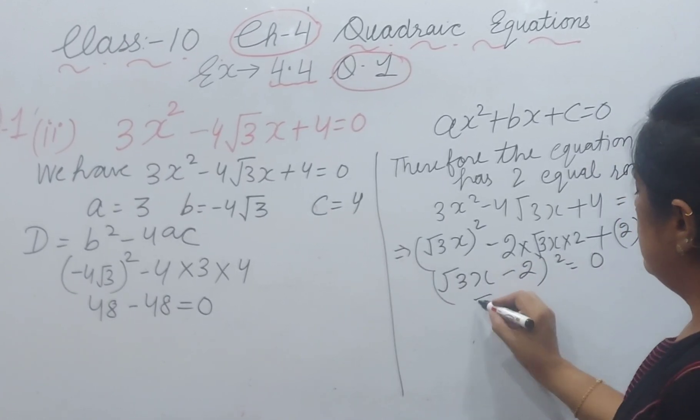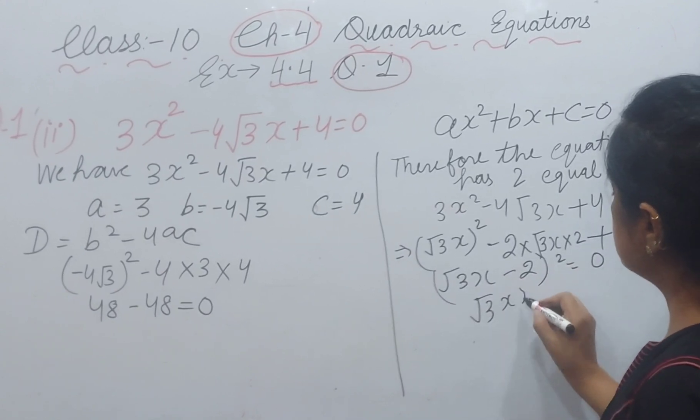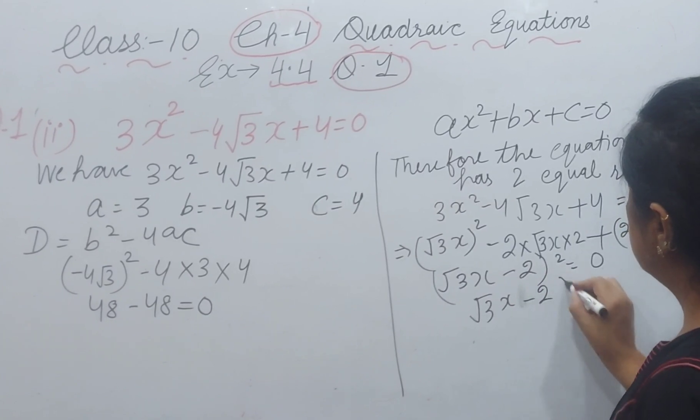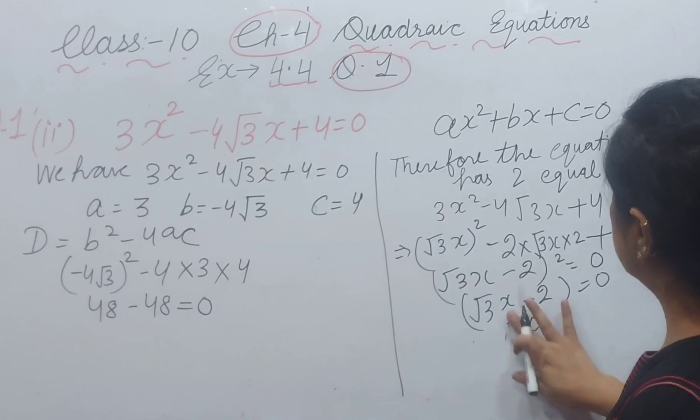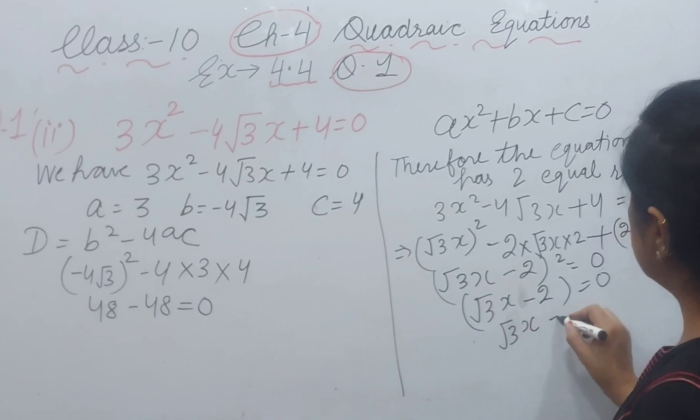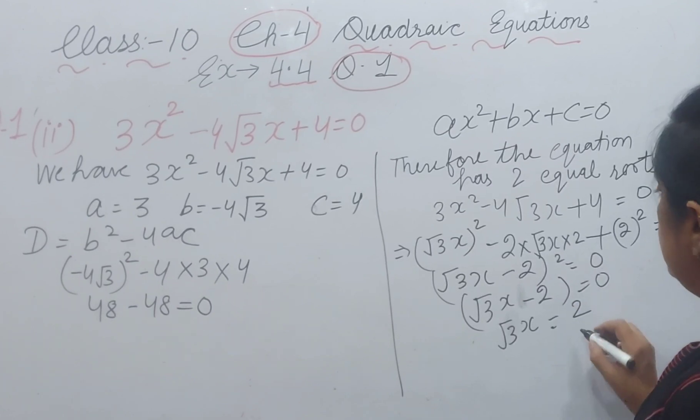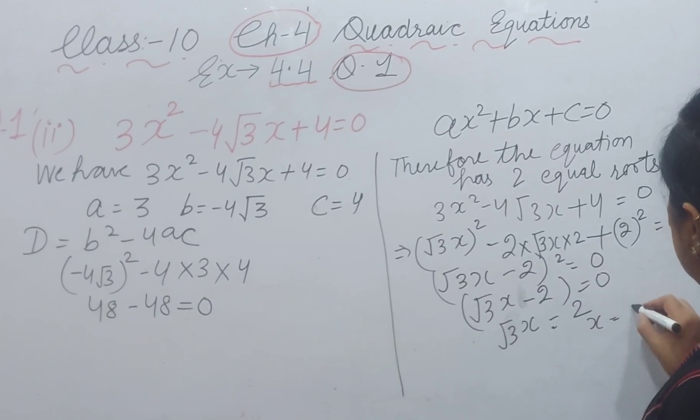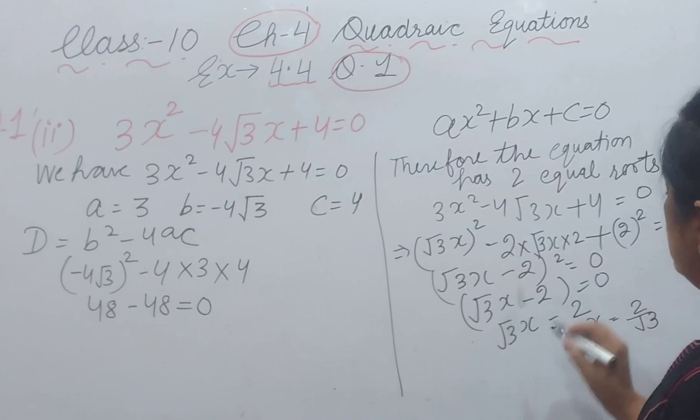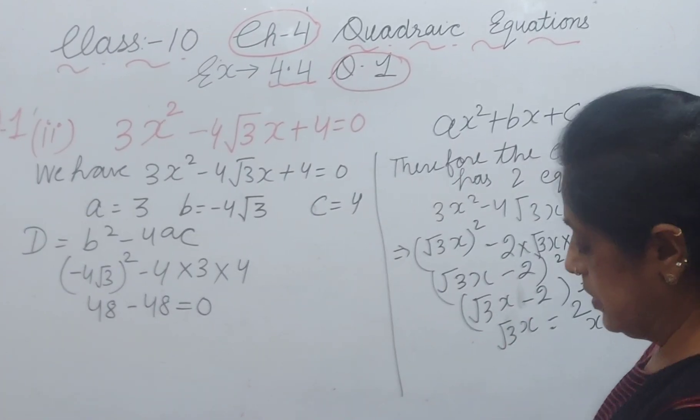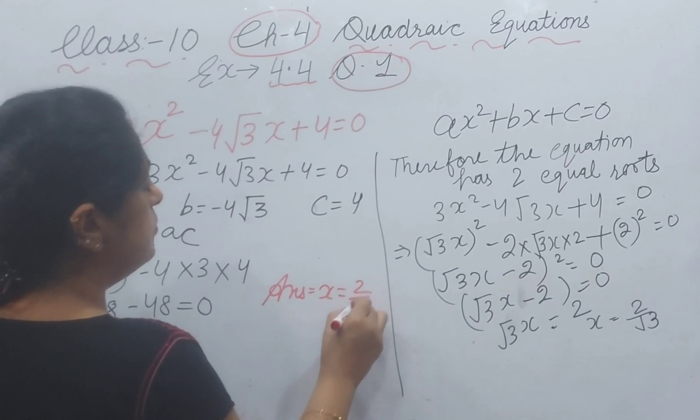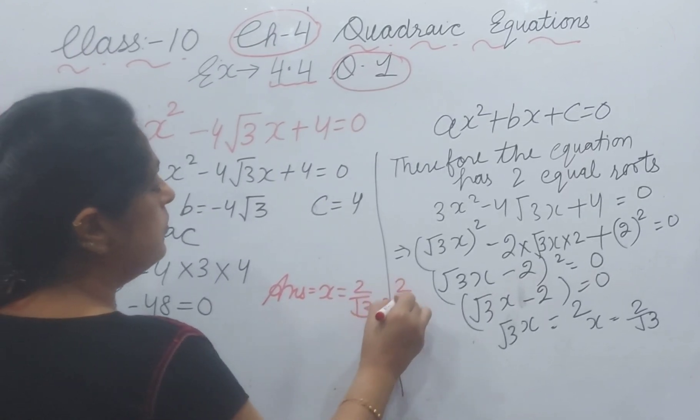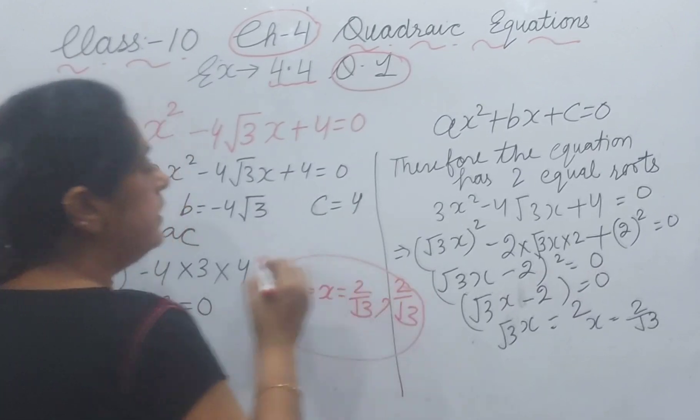When we solve (√3x - 2)(√3x - 2) = 0, that gives you x = 2/√3. Because we have two equal roots, our answer is x = 2/√3 and 2/√3. These are two equal roots.